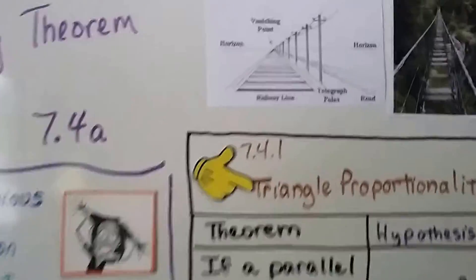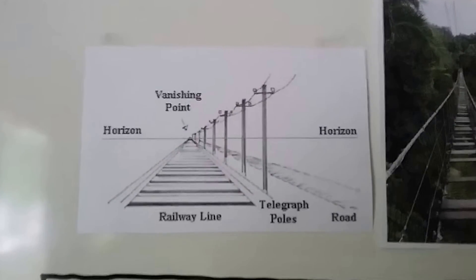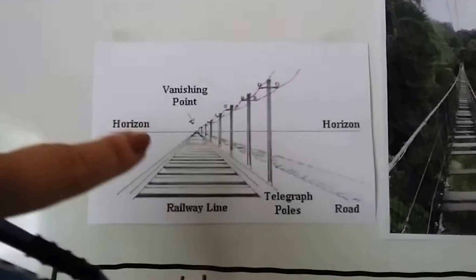Take a look at this railway line drawing here and these telegraph poles. We have a horizon in the background, and look, there's a vanishing point.